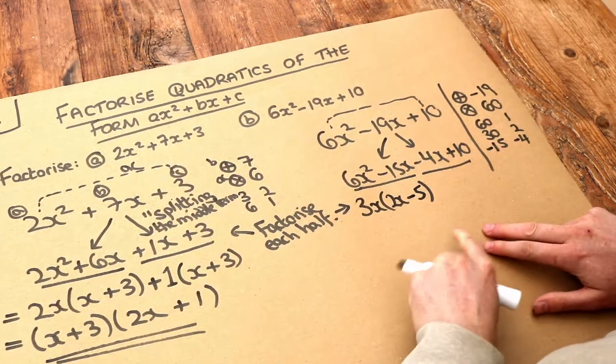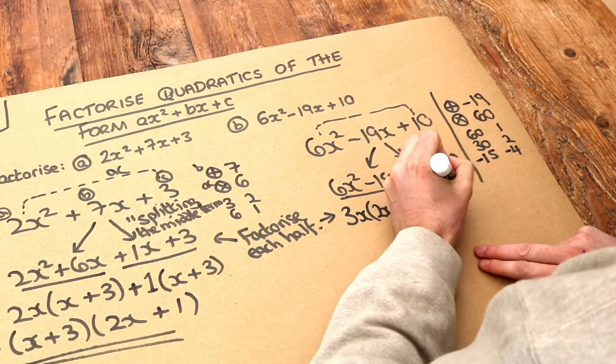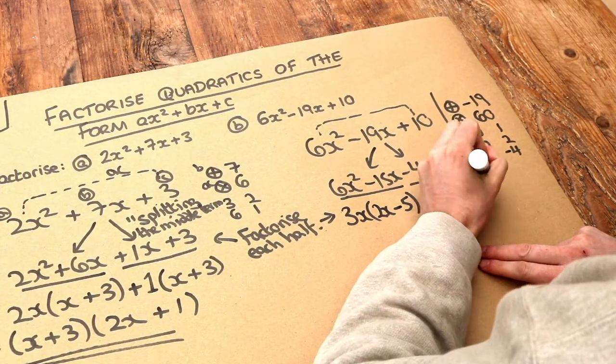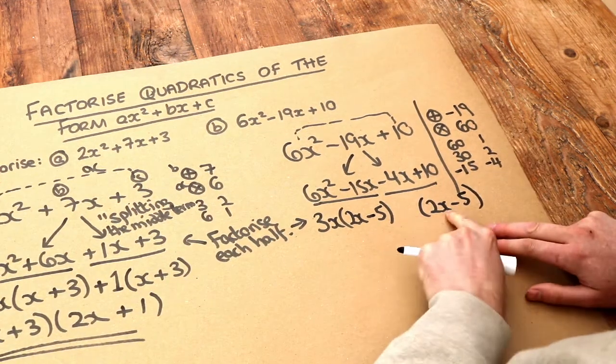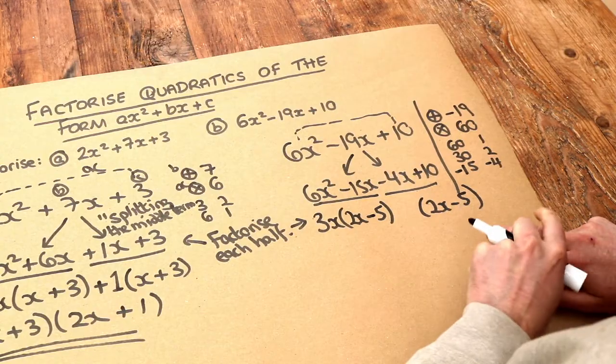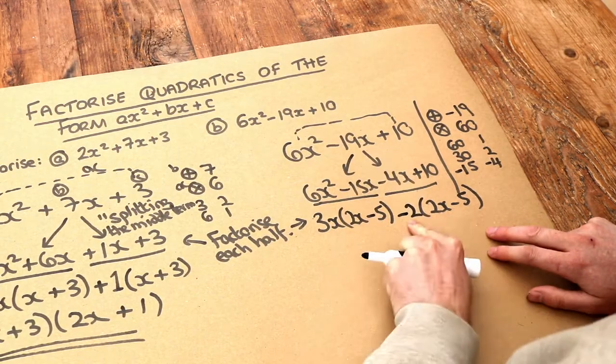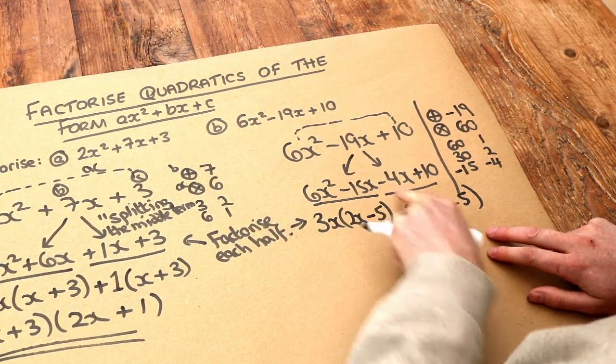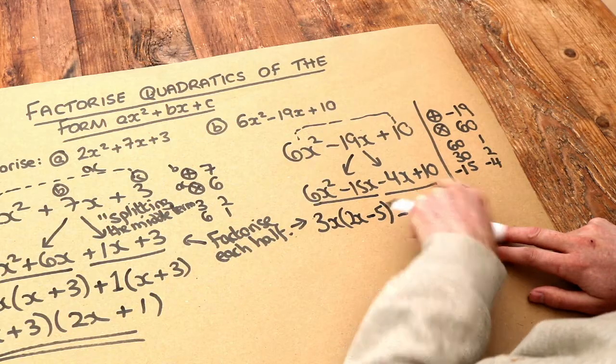Then, as before, we leave a space, duplicate the bracket, and then think, well what times 2x minus 5 will give you minus 4x plus 10. Well it's minus 2, isn't it? Because minus 2 times 2x is minus 4x. Minus 2 times minus 5 is positive 10.